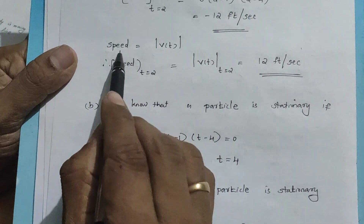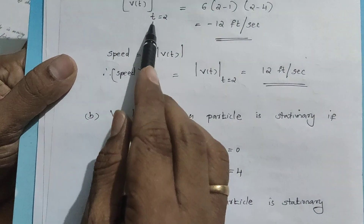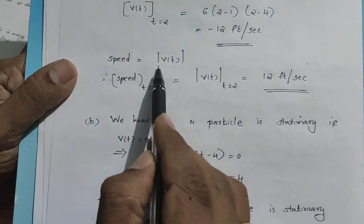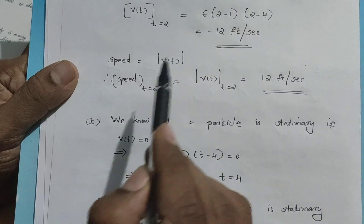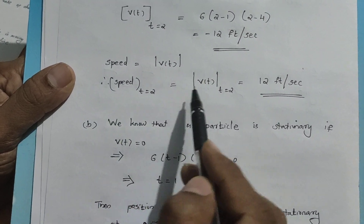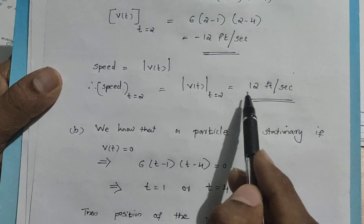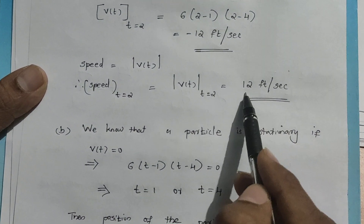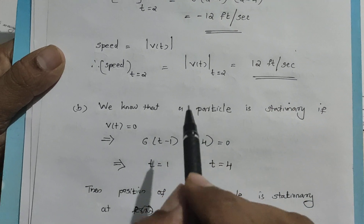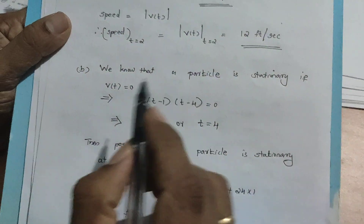Now find the speed at time t equal to 2. Speed equals the absolute value of v(t). Speed at t equal to 2 is |v(2)|, which is equal to 12 feet per second.